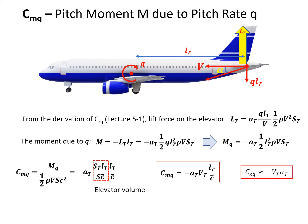Let's do a bit of discussion. We've derived CZq one step previous before CMq, and it has minus VT times AT. The difference is LT over C, the ratio. Usually LT over C is between 4 and 5, so CMq is much larger than CZq. It's more sensitive. If there is a pitching rate, the moment change is more sensitive than the vertical force.